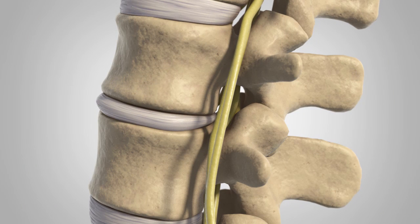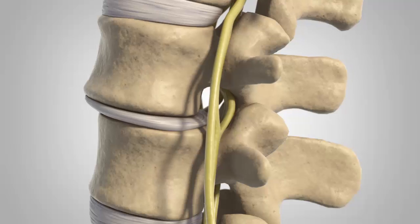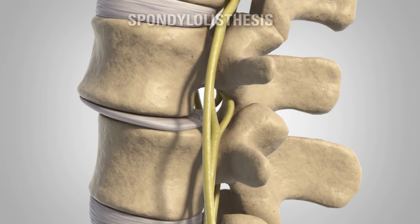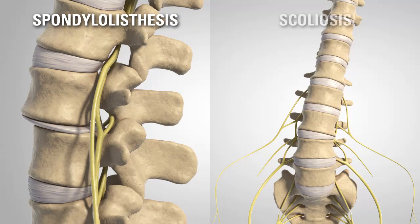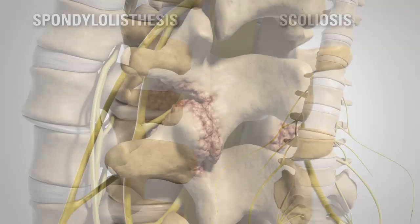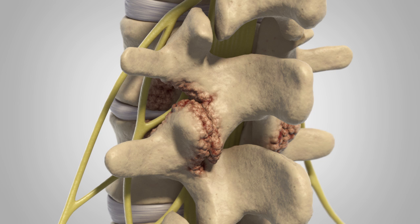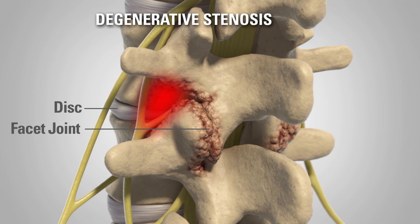With advanced DDD, the loss of disc height can lead to segmental instability, resulting in degenerative spondylolisthesis, or asymmetric disc height loss, resulting in degenerative scoliosis. The advanced degenerative changes affecting the discs, facet joints, and surrounding soft tissues can result in foraminal or canal narrowing, also known as degenerative stenosis.